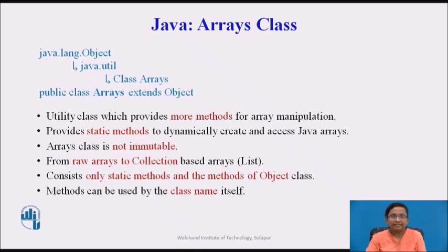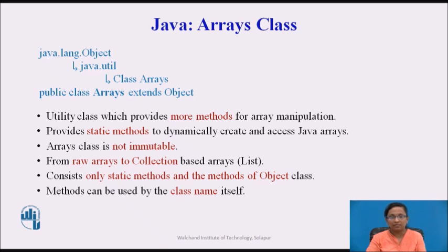Now let's see the Arrays class in detail. The Arrays class in the java.util package is part of the Java Collection Framework. It is a utility class which provides more methods for array manipulation such as searching and sorting. It provides static methods to dynamically create and access Java arrays. Arrays class is not final. It provides a bridge from raw arrays to collection-based arrays, and consists only of static methods and the methods of the Object class, which is its superclass. The methods of this class can be used by the class name itself.